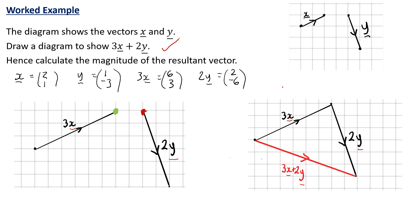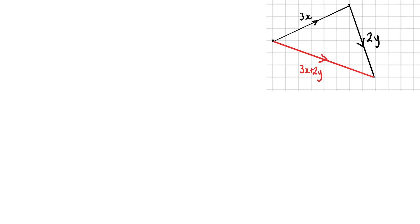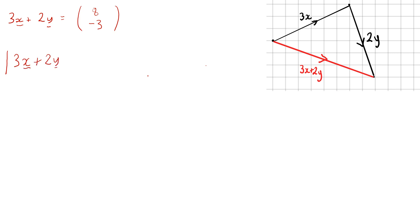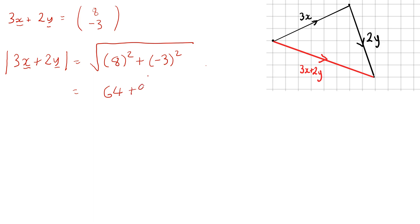So what we've just done is drawn a diagram to show 3x plus 2y. The last part is to calculate the magnitude of the resultant vector. Looking at the components of 3x plus 2y: the journey went 8 along and 3 down, so this has components (8, -3). To calculate the magnitude, we use Pythagoras: √(8² + 3²) = √(64 + 9) = √73, which evaluates to approximately 8.54 units.